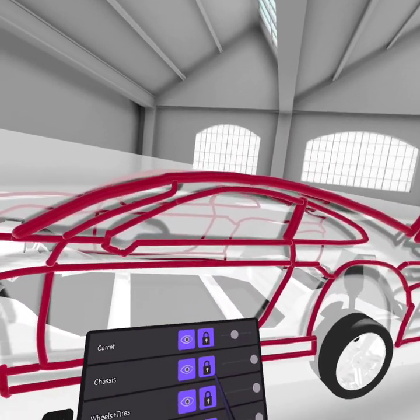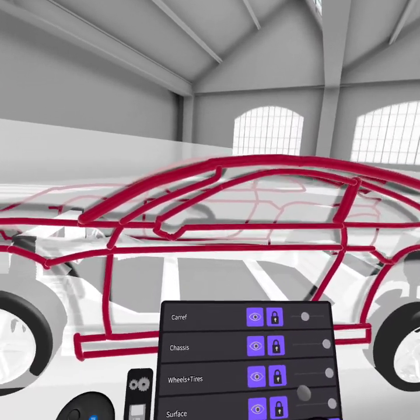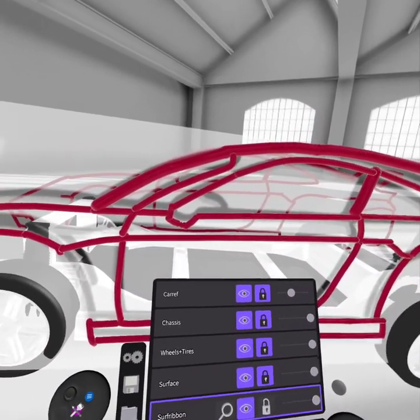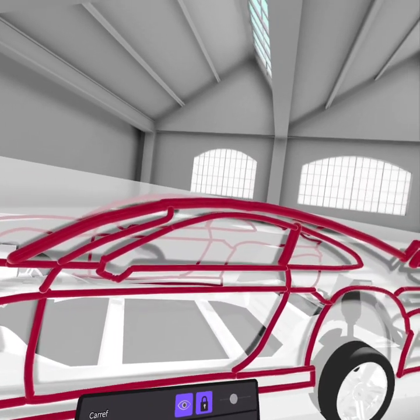This is when I start creating the outer surface. I call it Surf Ribbon. It's a new layer that I created, and I'll show you one way to do that.